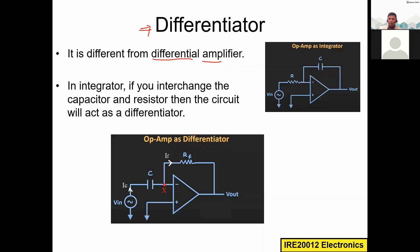In the integrator, we have the resistor at the input and the capacitor in the feedback, and we added a shunt resistor in parallel to make it a practical integrator. For the differentiator, we simply exchange the capacitor and resistor — putting the capacitor at the input and the resistor in the feedback.